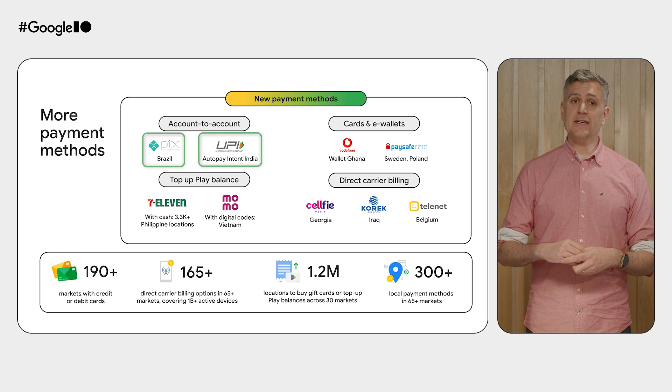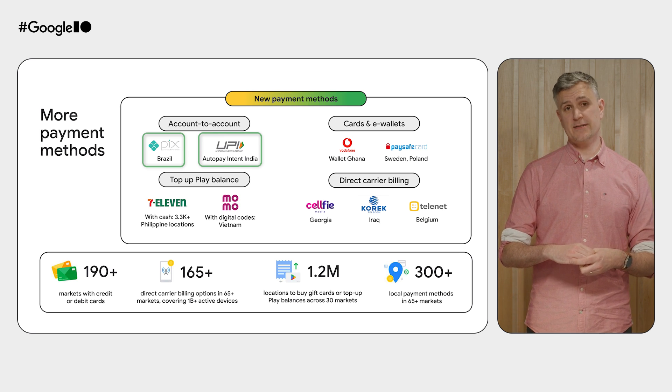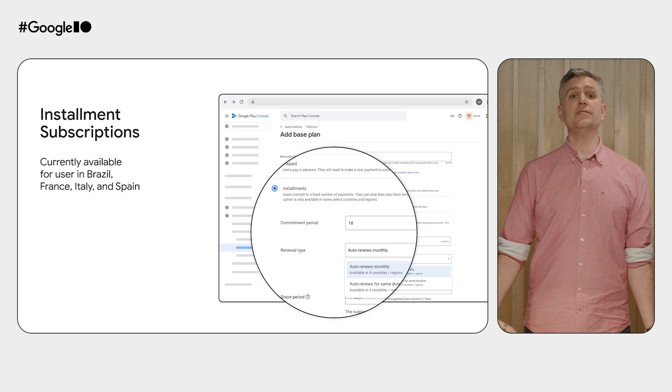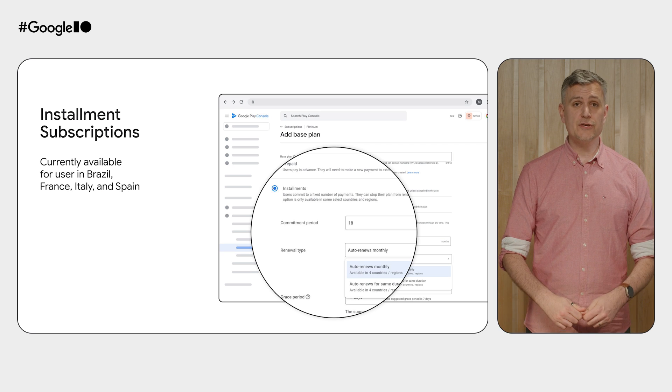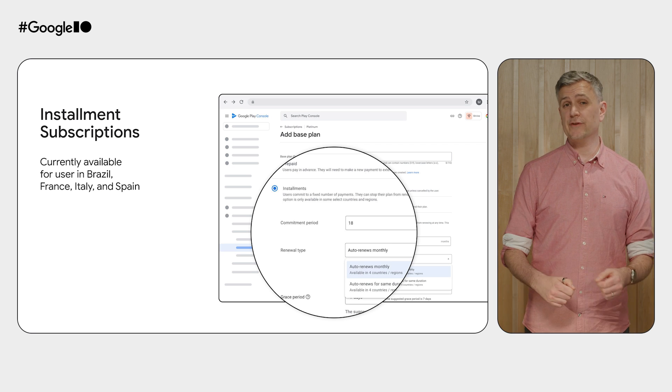Our payment method library now includes over 300 local forms of payment across more than 65 markets. We've also added a new way to increase the reach of your subscriptions with the launch of installment subscriptions in select regions. These allow you to reach users who want the advantages of a long-term subscription but are blocked by the high upfront cost. With installments, customers can make monthly payments for long-term subscriptions such as annual plans, giving subscribers more flexibility and giving you the ability to reach and keep more subscribers.